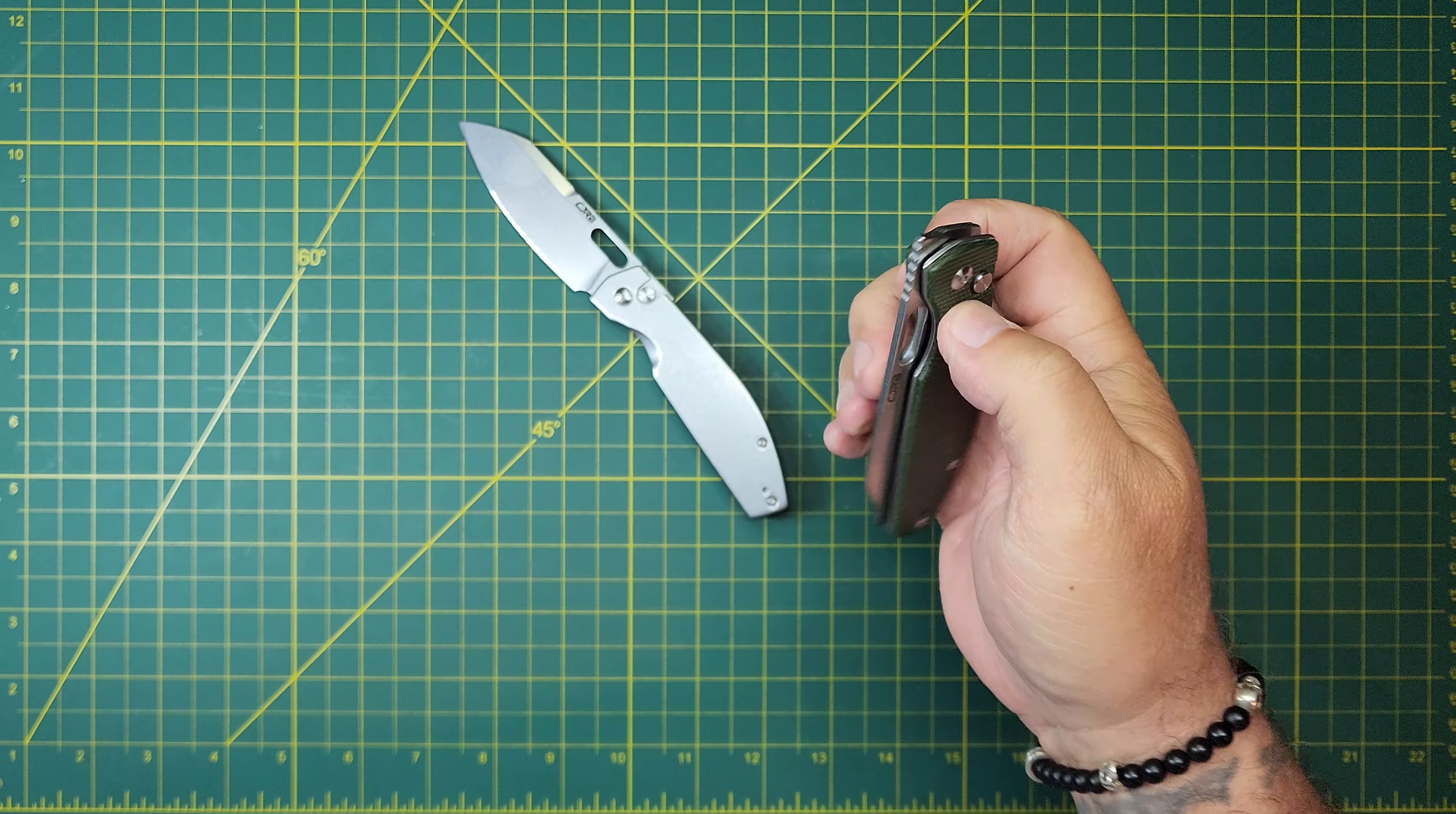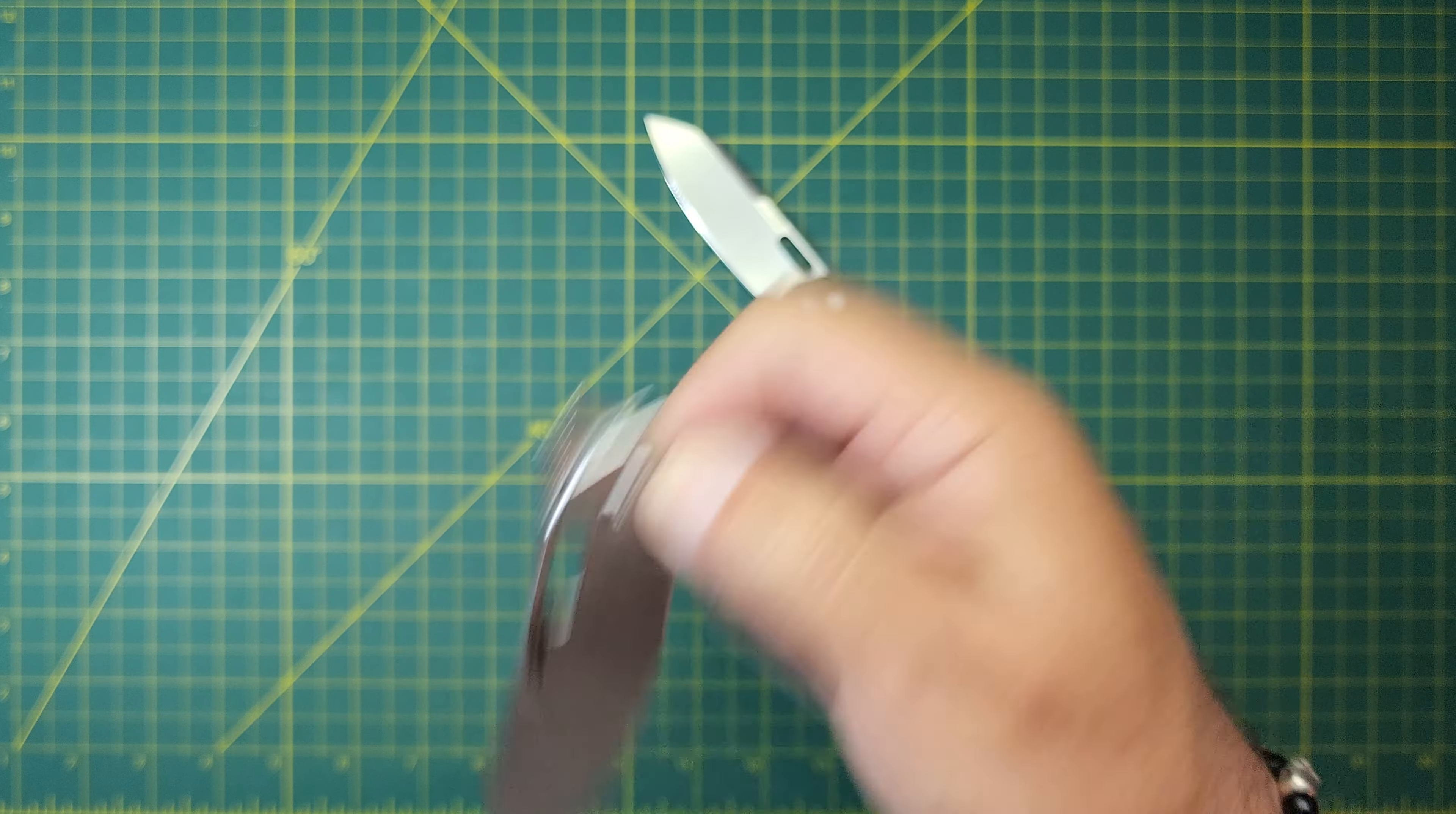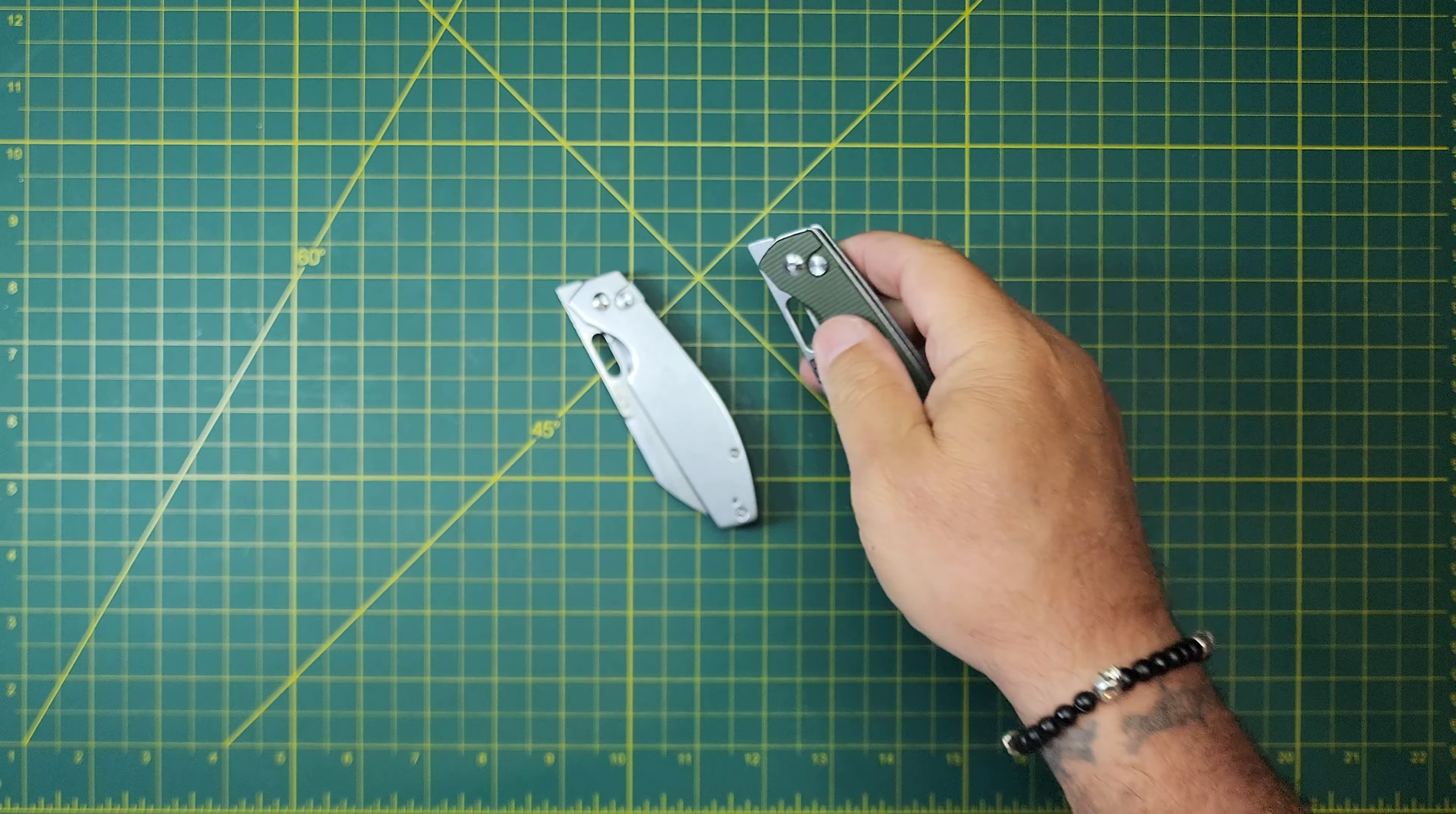So the main difference between the two, well, not the main difference, but one of the big differences between these two knives, is this one sounds amazing. This one, that micarta acted like a muffler. So you can still hear it, but noticeably different.